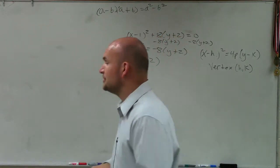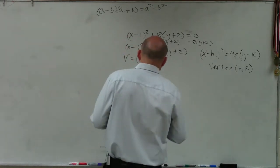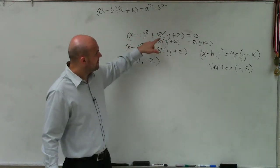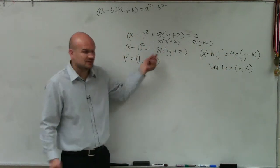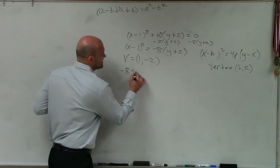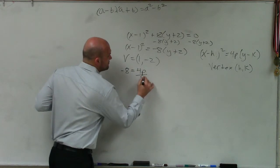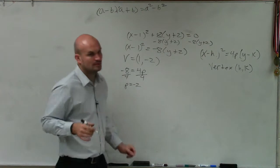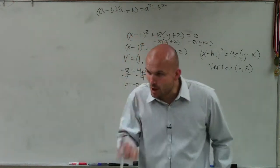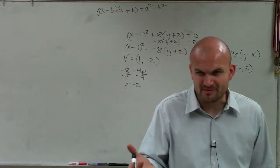But now the next thing we need to do is the main important thing, we can evaluate the p. Remember, our p is 4p equals that coefficient. So I can say negative 8 is equal to 4p. Divide by 4, divide by 4, p equals negative 2. And remember, this was the most important thing.